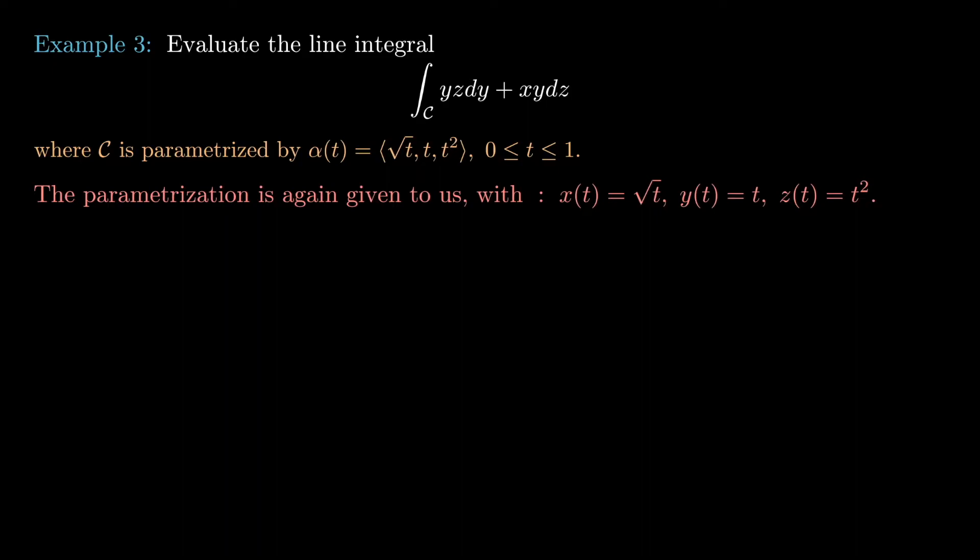We just need to calculate the time derivative of each of these. We know that dx/dt is 1/(2√t), which tells us that dx is 1/(2√t) dt. We see that dy/dt is 1, so dy equals dt. And dz/dt is 2t, so dz is 2t dt.